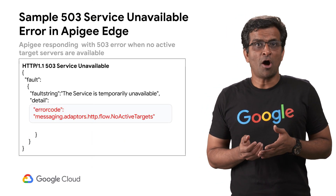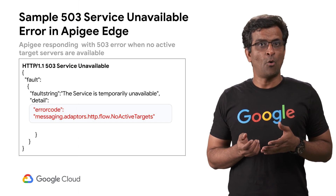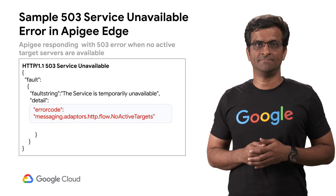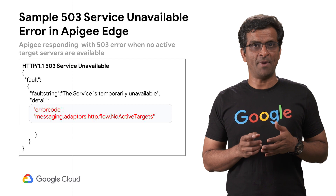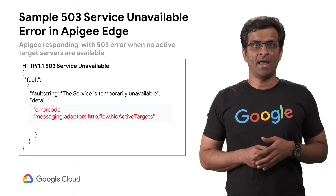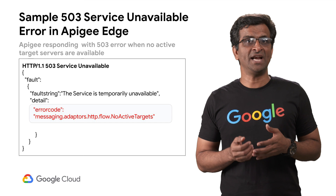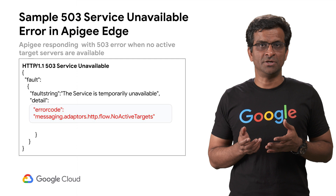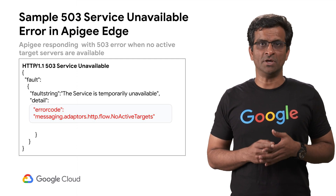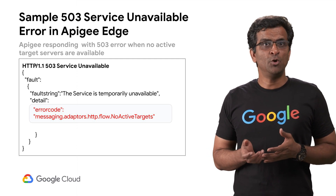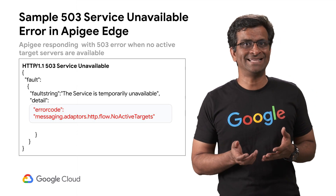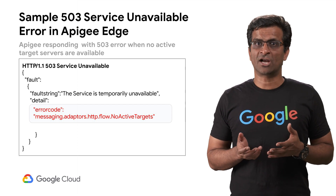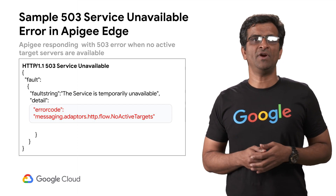When there are TLS handshake failures between APG Edge and the back-end service, a 503 error with fault code messaging.adapters.http.flow.sslHandshakeFailed is returned to the client. Sometimes you might also see a 503 error with the fault code messaging.adapters.http.flow.noActiveTargets. This particular error code is observed when an APG proxy uses a target server instead of a direct URL in the target endpoint configuration and there are no healthy target servers available. This happens if the number of failures from each target server has exceeded the max-failure count configured. This error and its causes will be discussed in more detail in subsequent videos.